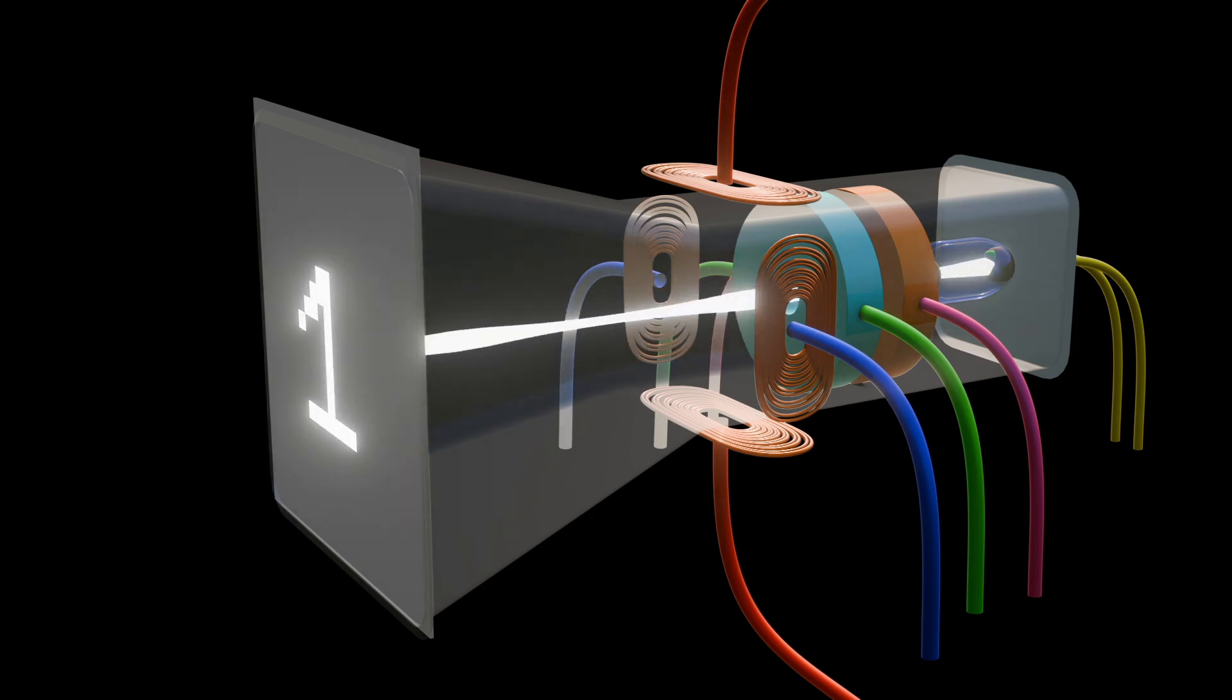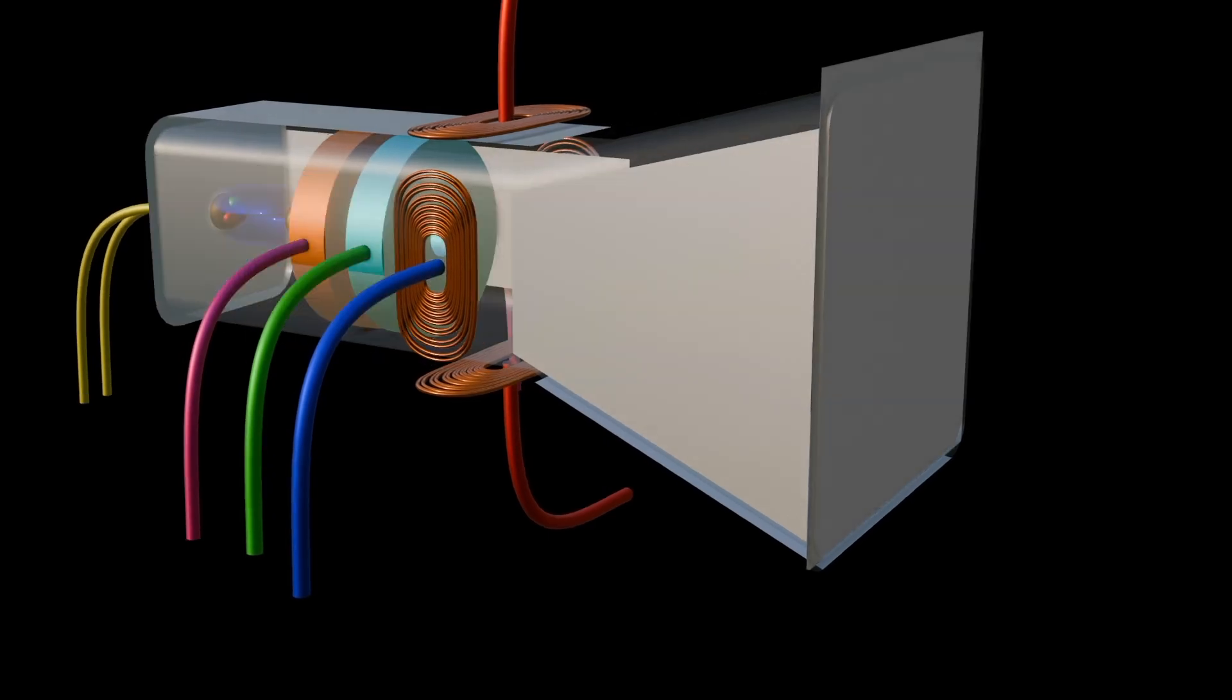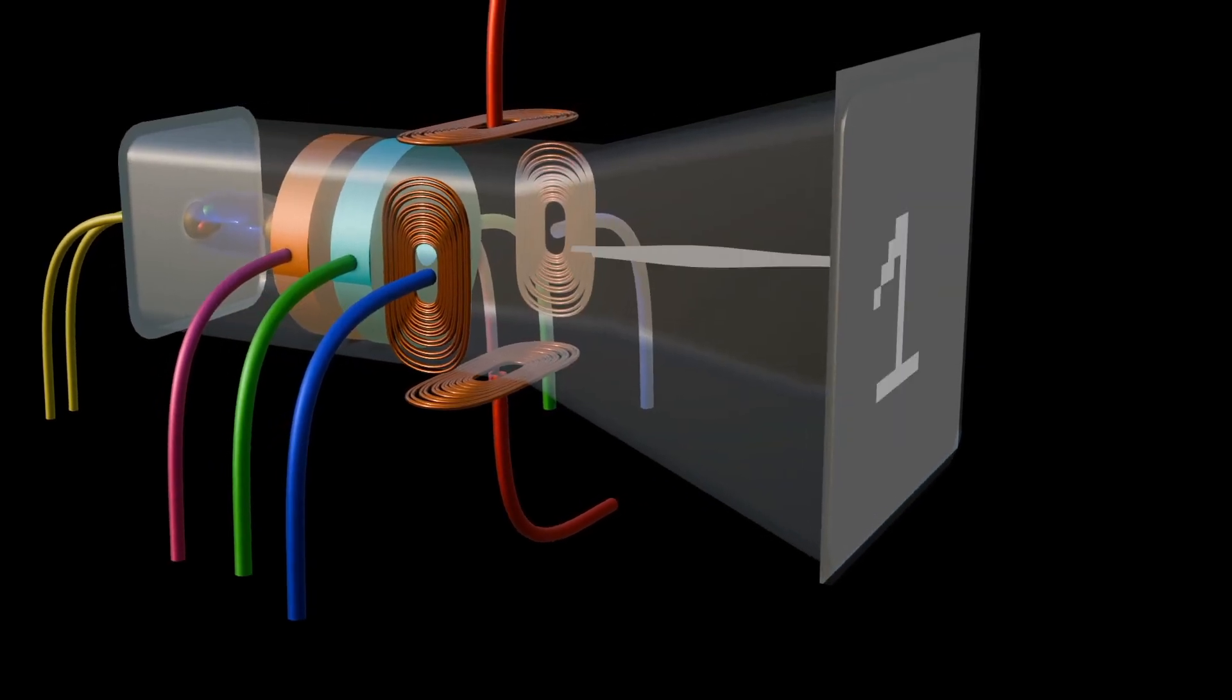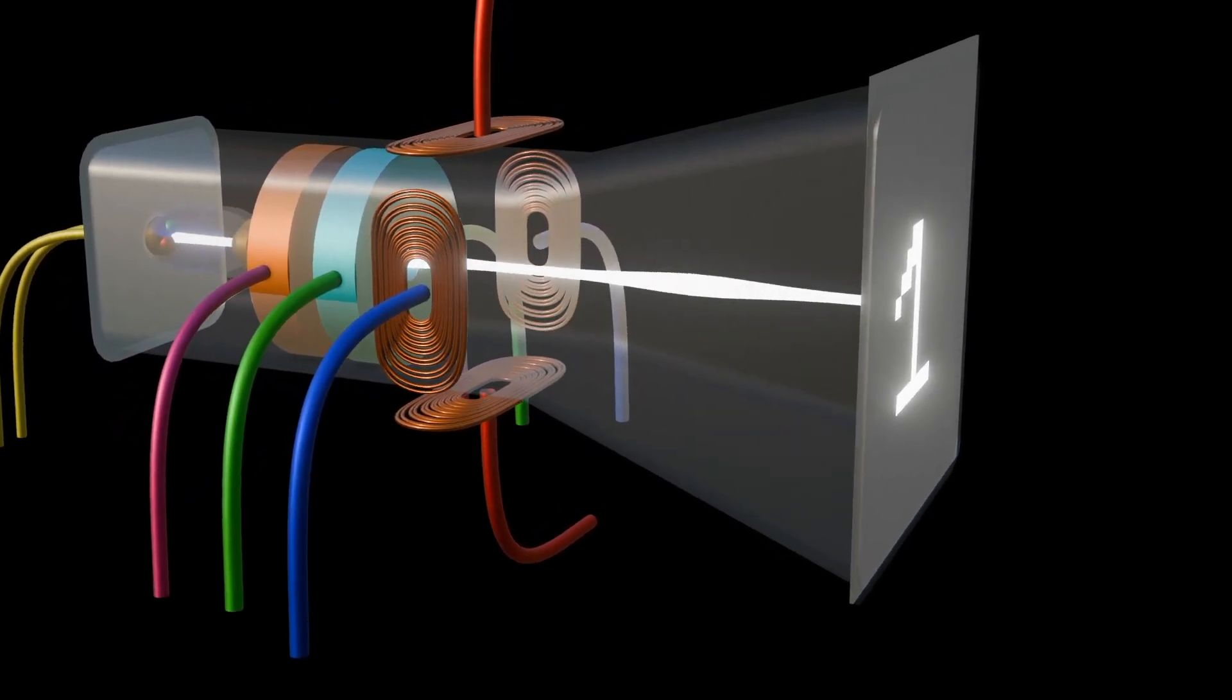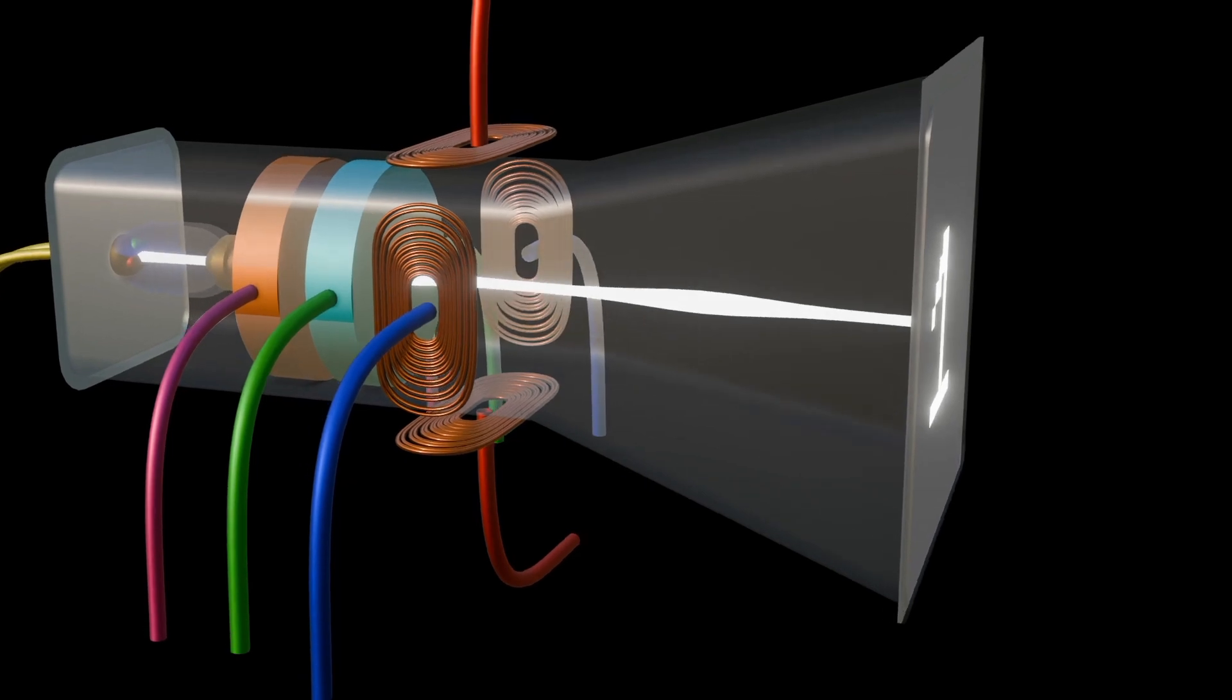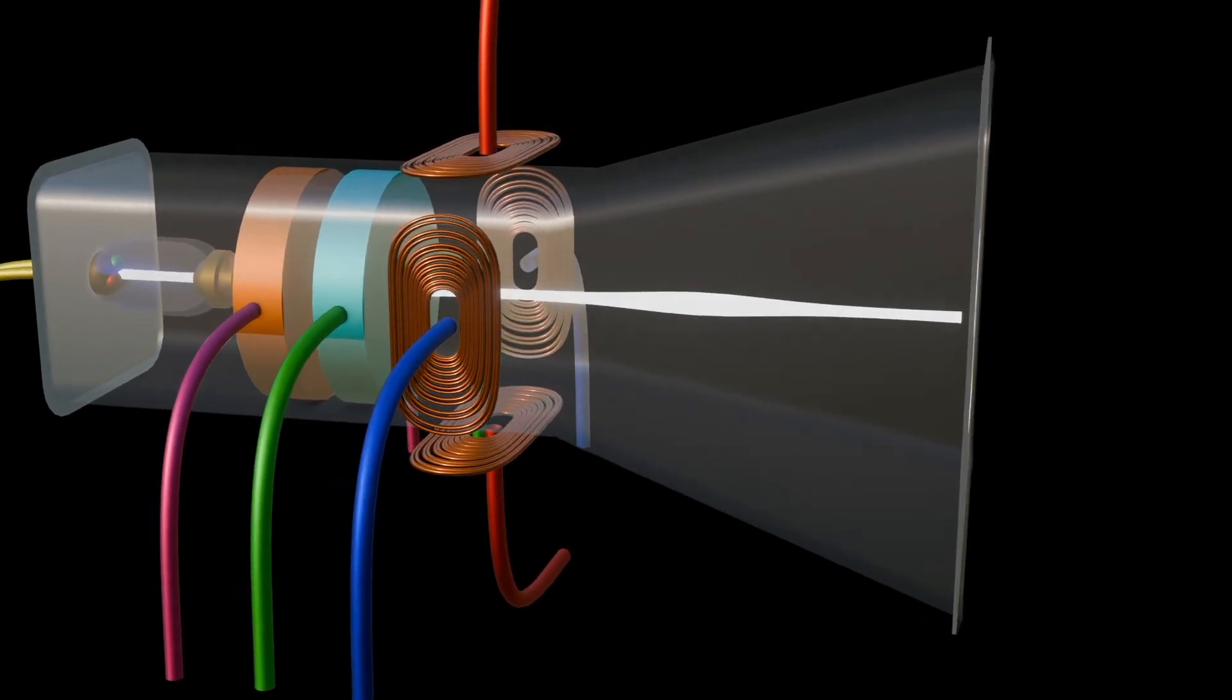The electron gun modulates the intensity of the electron beam based on the brightness information, and the deflection coil positions the beam according to the video signal timing. The electron gun rapidly scans across the screen line by line in a raster pattern, and the beam's intensity is modulated in sync with the video signal.